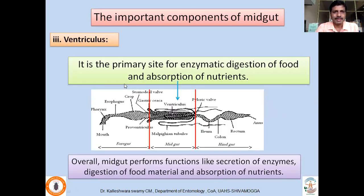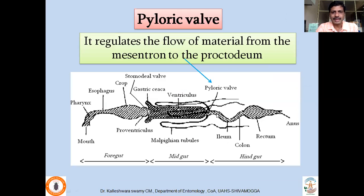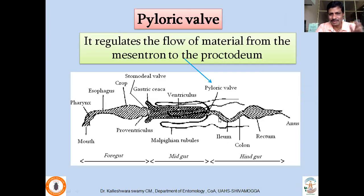The third important part of the midgut is the ventriculus, the larger region whose main function is to secrete enzymes, digest food, and absorb nutrients into the haemocoel. At the junction of the midgut and hindgut, there are pyloric valves similar to the stomodial valves at the foregut-midgut junction. Their function is to prevent food from moving from hindgut back to midgut and to selectively push undigested food from midgut to hindgut.